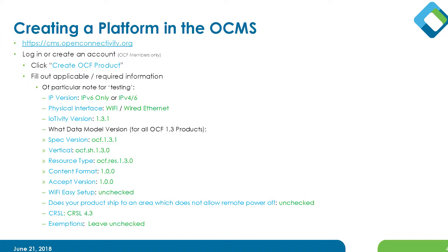The form includes information about the operating system, serial numbers, and IP version. With OCF, to have your product certified you have to enable IPv6. You could also enable IPv4, but you cannot enable only IPv4. You can select which physical interface and the IP version you are using. IPv4 and OCF standards are completely independent — you don't have to use IPv4 at all.